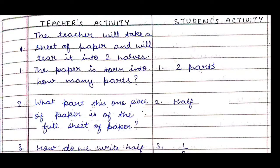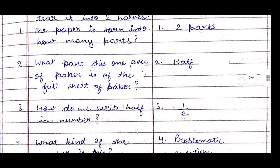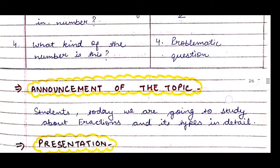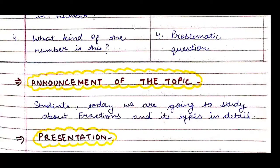Then the third question: how do we write half as a number? They already know that half is written as 1/2. Then we will ask: what kind of number is this? That's a problematic question because they don't know the answer — and this leads us into our topic.